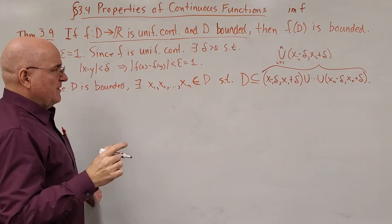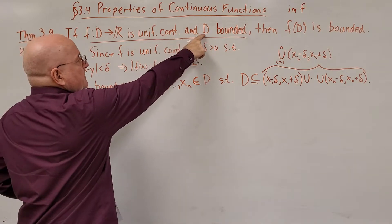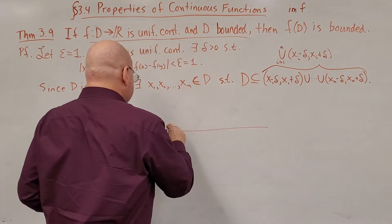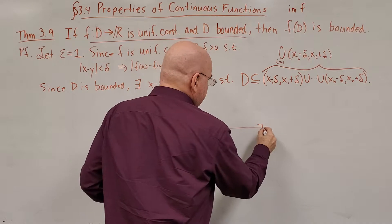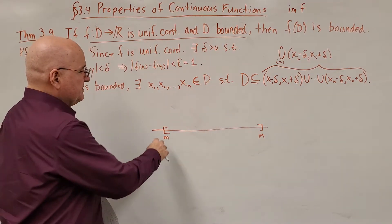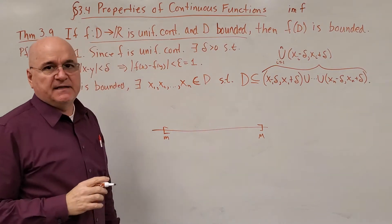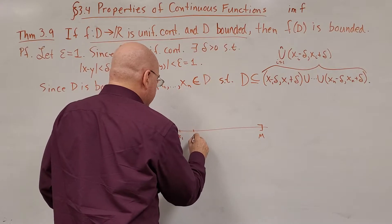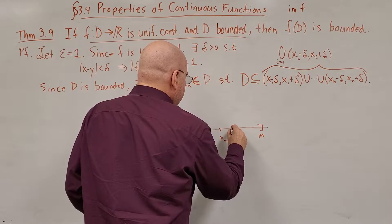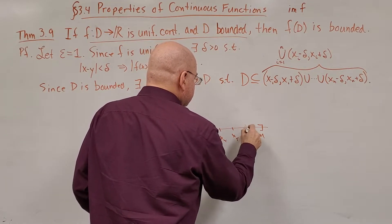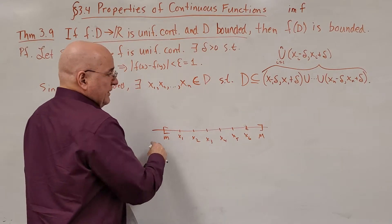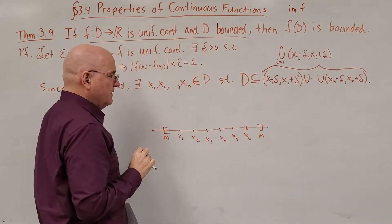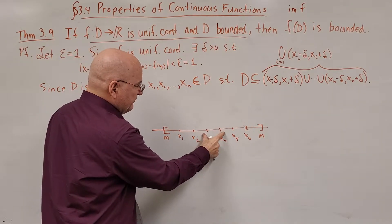So let's make sure we understand why that's true. D is a bounded set. So it has a lower bound and an upper bound. So there is some number, maybe little m, there's some number, maybe capital M, where the domain D is completely contained inside that interval. All we're doing here is defining an x₁, x₂, x₃, x₄, x₅, x₆. They don't have to be evenly spaced in here, because it's possible that D is not this entire interval. It could be an interval here, and maybe an interval here, and an interval here.